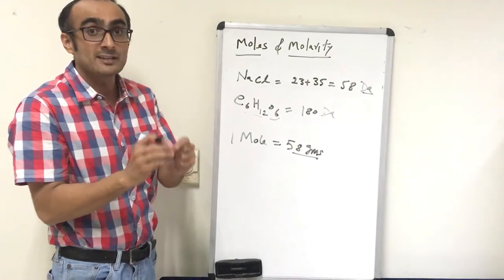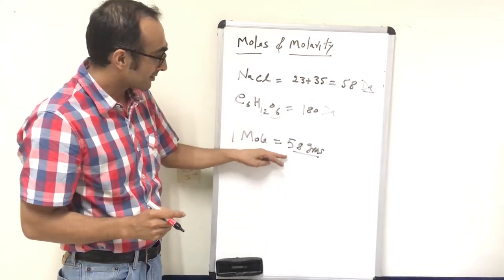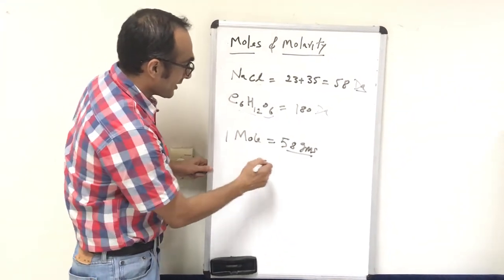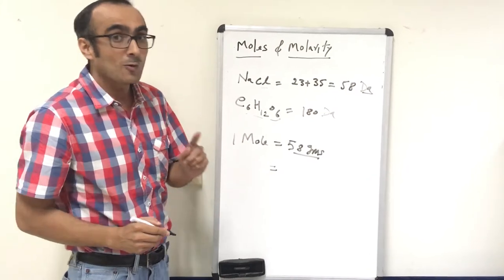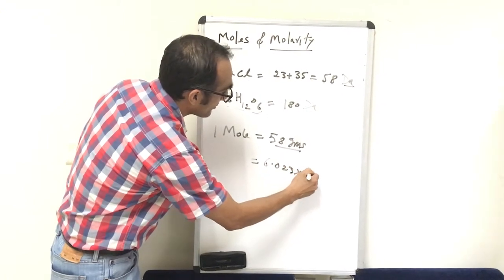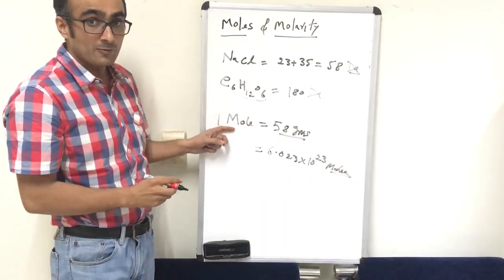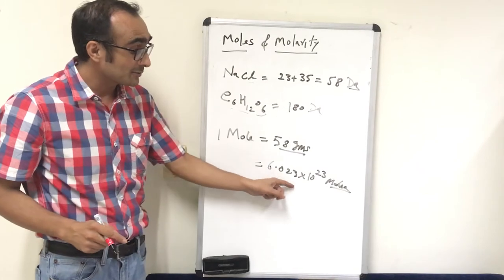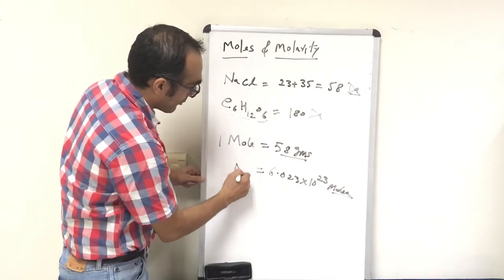If you want to measure one mole of NaCl, you need to take 58 grams of sodium chloride — that will be equal to one mole. Similarly, if you want to calculate the number of molecules of NaCl present in 58 grams, that will be equal to one Avogadro's number, which is 6.023 × 10²³ molecules. This is by definition.